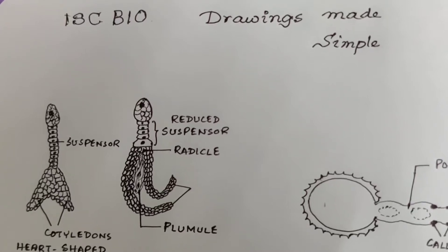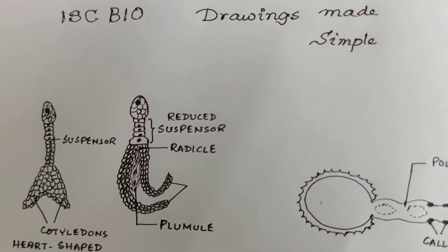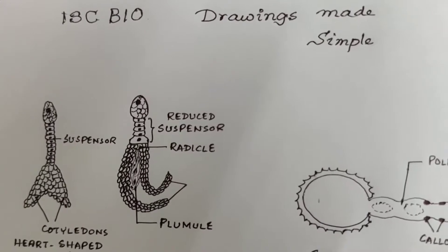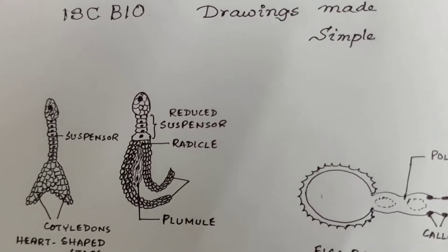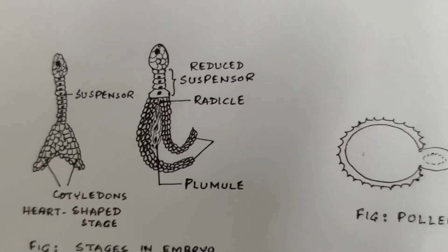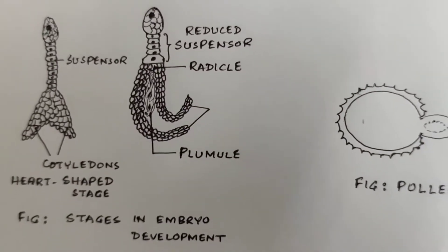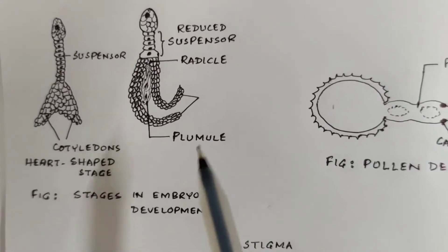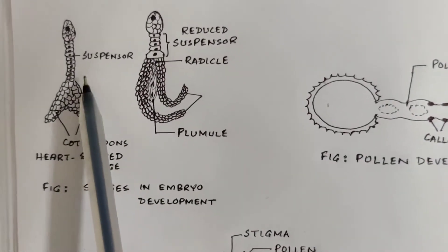Hello friends, this is a tutorial video on drawings of ISC biology made simple. The first drawing shows the stages in embryo development — this is the heart-shaped stage of the embryo.